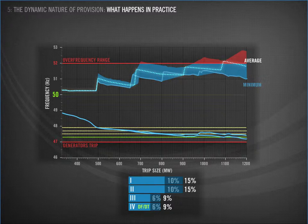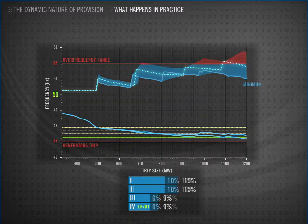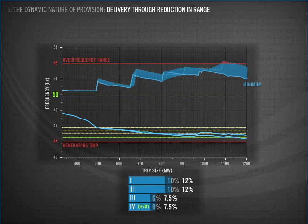One approach is to impose a maximum — in this case, let's say 39% is the top limit. You can see on the sawtooth that it shrinks the range of provision, and performance improves. If this is required in real-time, we have been advised that technically it is currently quite challenging for providers. It requires real-time monitoring and control of AUFLS relays, which is not commonly available.